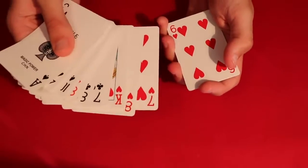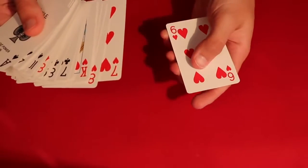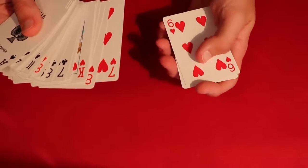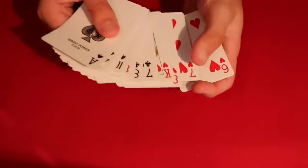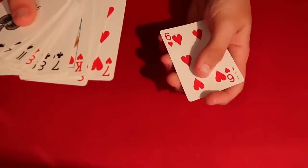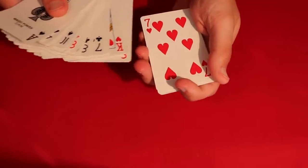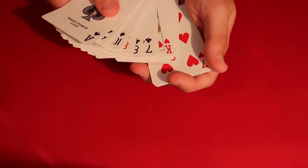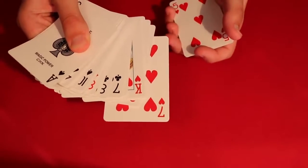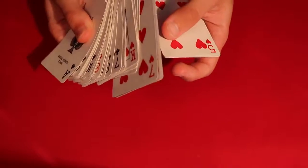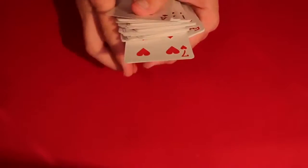All you do is while the spectators are focused on that seven or whatever card they picked, you just have to put a pinky break underneath the next card below. So in this case, this is gonna be the Six of Hearts. You pull off their card, get a pinky break, the card below that, leave their choice onto the pinky break. You can square that up, and then what you do is you push forward both cards. So in this case, I actually do have both the seven and the six in that grip, just like that.